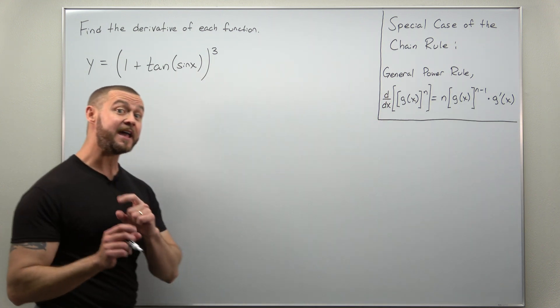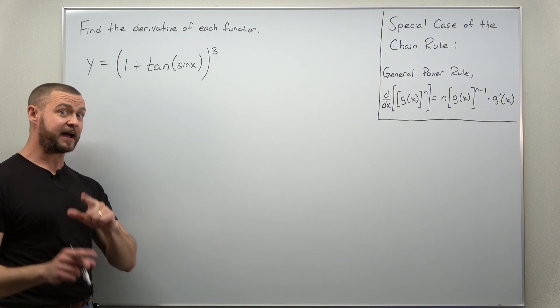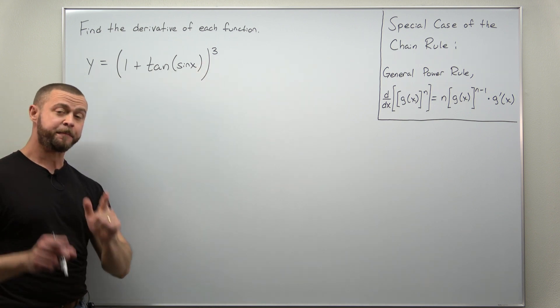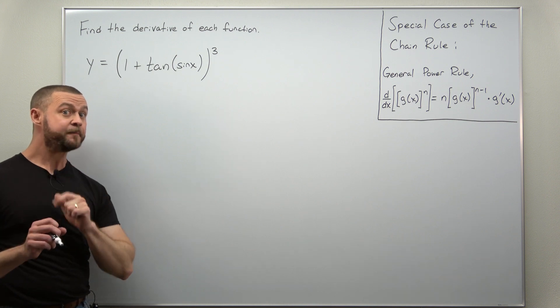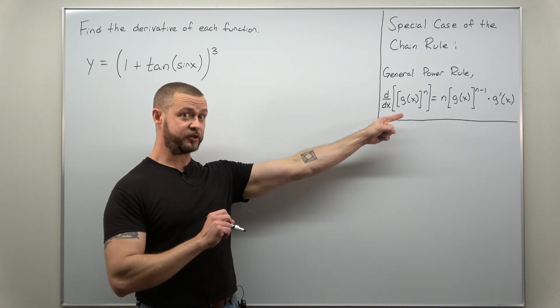Let's start by noticing that we have a function 1 plus tangent of sine of x all raised to a power. So we're going to apply the chain rule the first time in the special case that I call the general power rule.